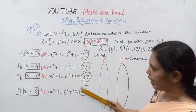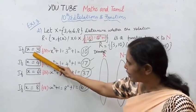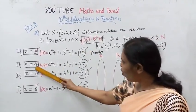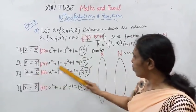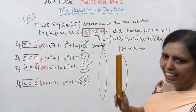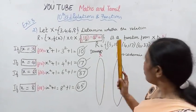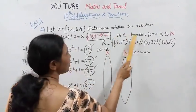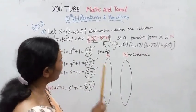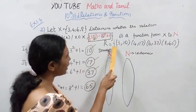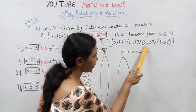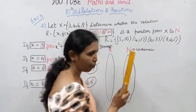The value for x=3: f(3) = 10; x=4: f(4) = 17; x=6: f(6) = 37; x=8: f(8) = 65. So the relation R = {(3,10), (4,17), (6,37), (8,65)}. This is the relation R = {(x, f(x))} for x in X.